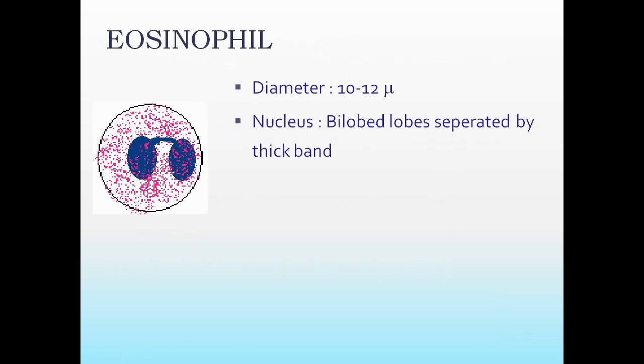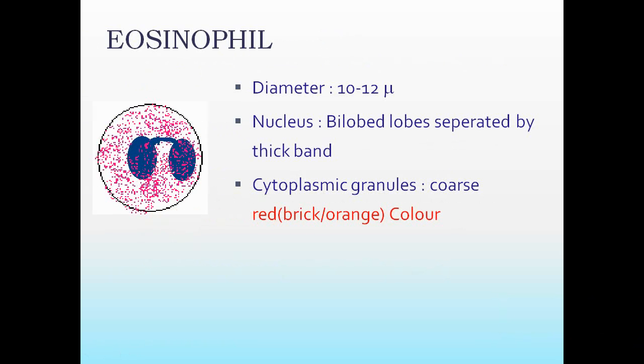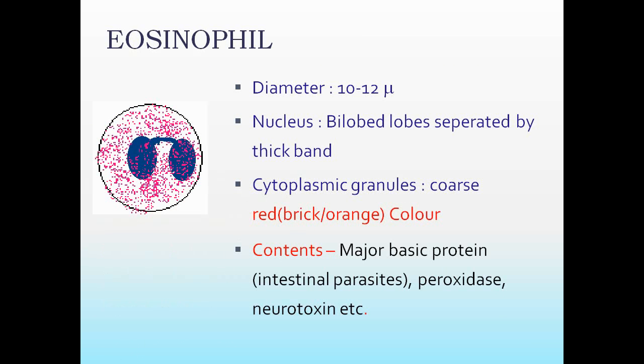The next cell is the eosinophil. Diameter is about 10 to 12 microns. Nucleus is bilobed, separated by a thick band. Cytoplasmic granules are coarse, red in colour — that is important. Contents include major basic proteins, peroxidase, neurotoxin, etc. These are the eosinophils.